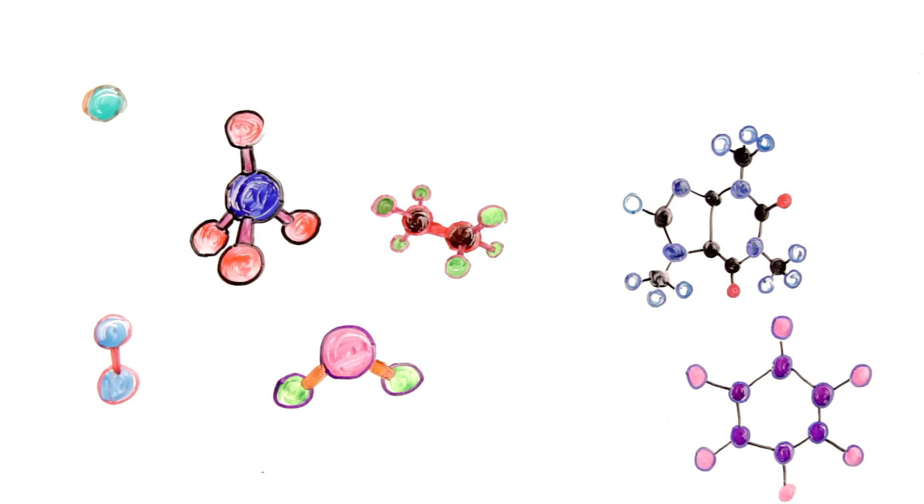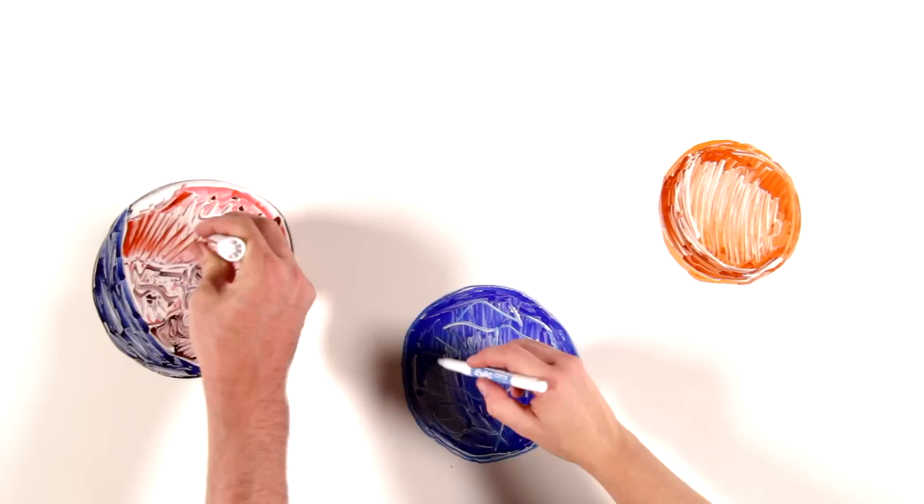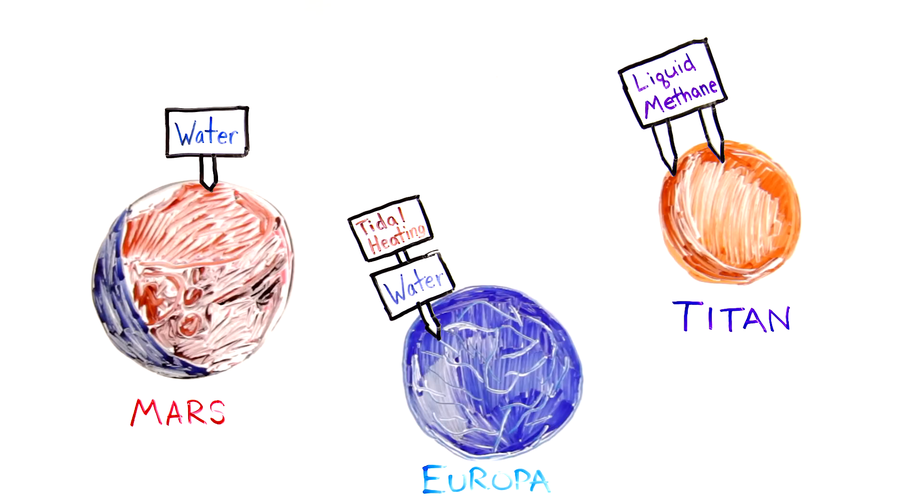It helps in the quest for life to look for precursors, or markers of life as we know it. To understand our own origins, we look for signs of water, organic molecules, and sources of energy on planets, moons, and meteorites.